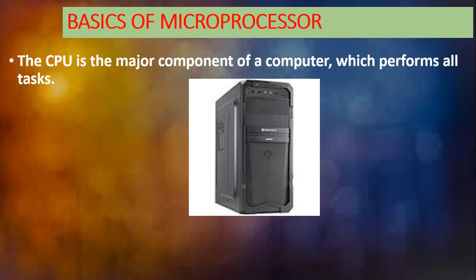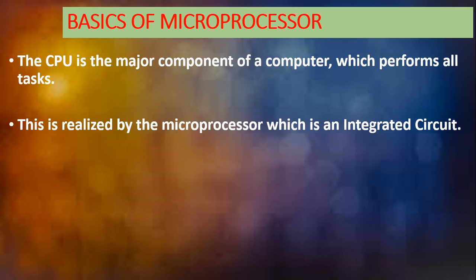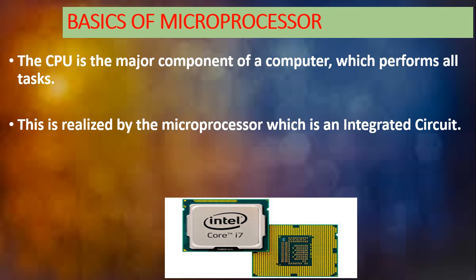Just like in a human being, our entire body is controlled by our brain — similarly, the entire system and all operations are controlled by the CPU. This is realized by the microprocessor, which is an integrated circuit. We have studied microprocessors in the third generation of computers, where thousands of transistors were replaced by a single integrated circuit. It is made up of a silicon chip which stores lots of instructions used to perform all types of calculations. Inside the CPU is the microprocessor, so the microprocessor is also termed as a CPU.